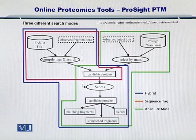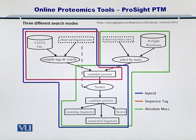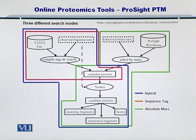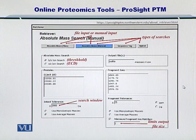The second mode of ProSight PTM search is the sequence tags mode, in which the mass spectrometry data is searched only to form sequence tags, allowing you to search them in sequence tag databases. The third mode is the absolute mass mode, in which you simply compare the mass measured from the mass spectrometer with the mass of all proteins in the protein database, and you arrive at a list of candidate proteins.